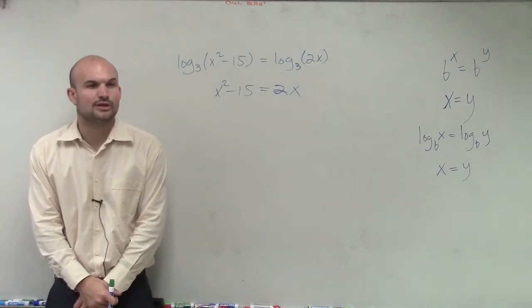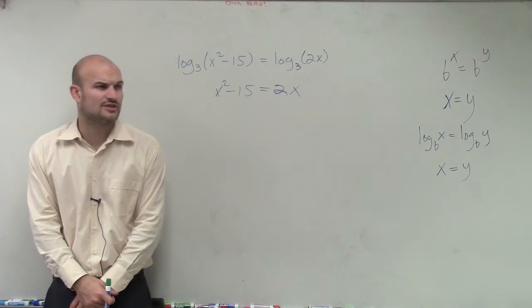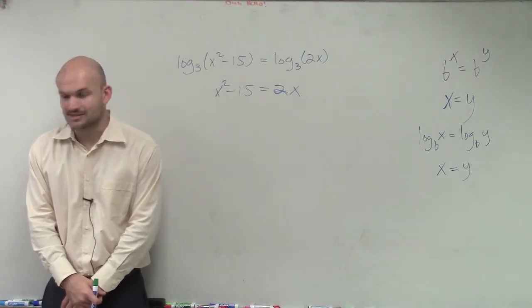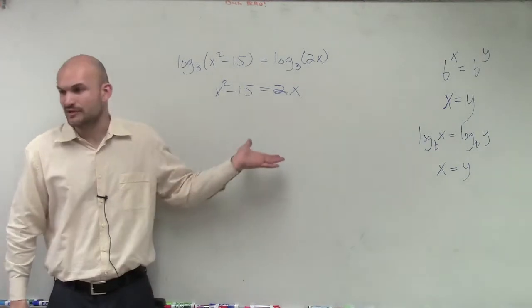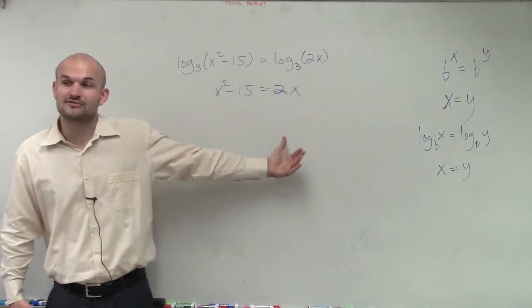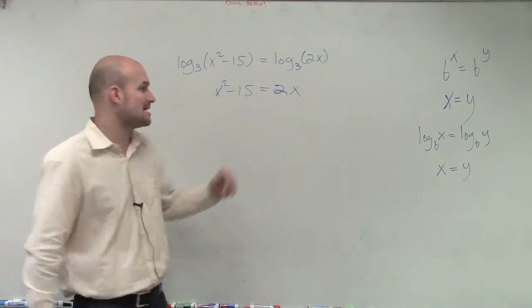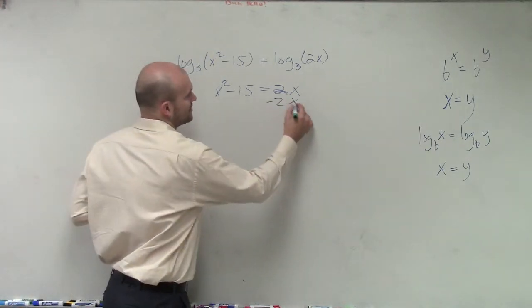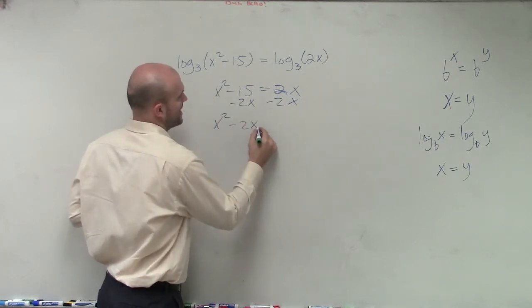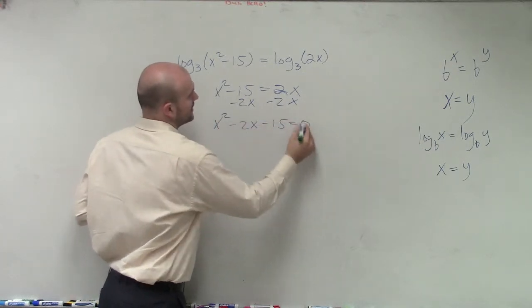So now we look at this, and usually a lot of times you don't need to solve for your x's, right? You just solve for x's. But in this case, can you get an x by itself? No. No, this is a quadratic. So when we have quadratics, we work on getting them to the same side, right? So I'll subtract the 2x. Therefore, I have x squared minus 2x minus 15 equals 0.